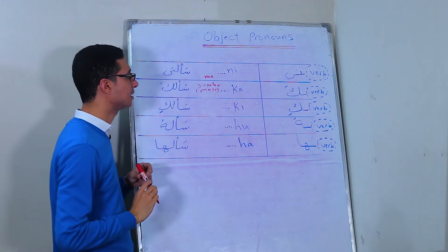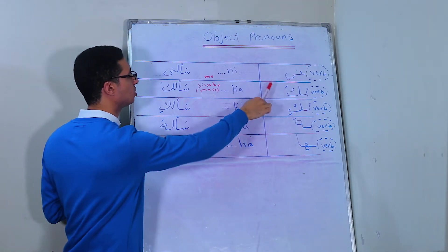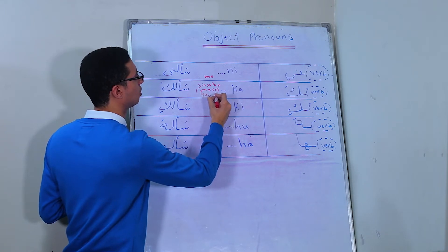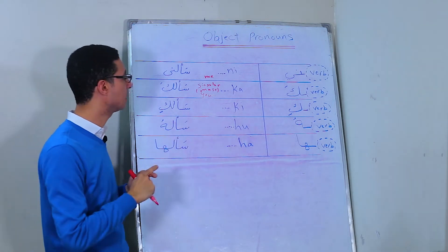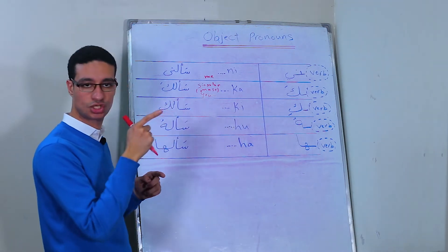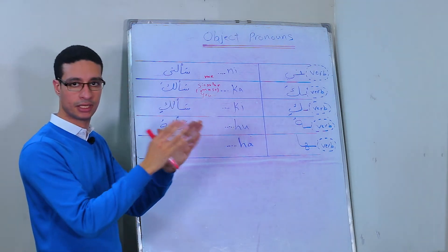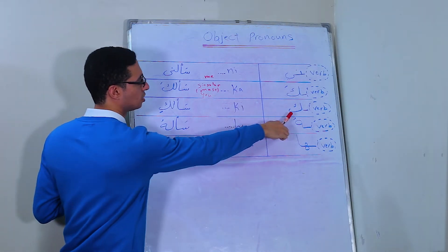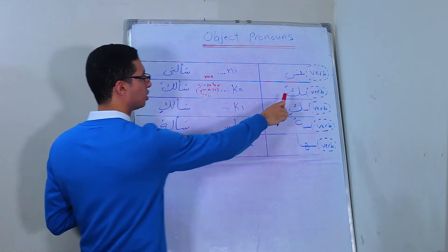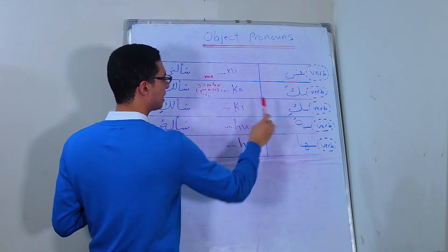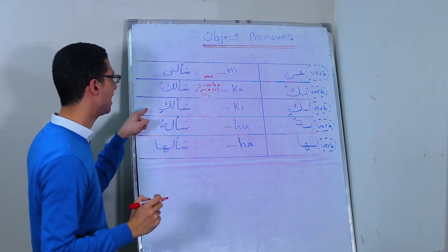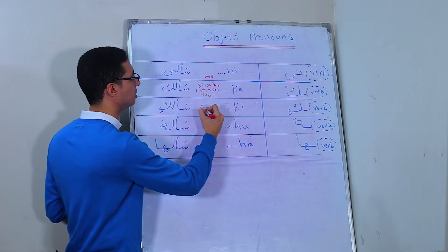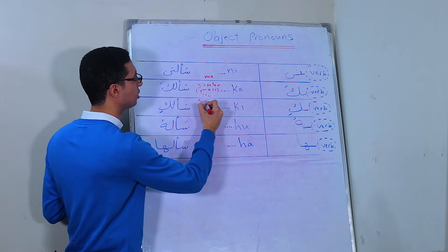The second one is كَ, which we use to say 'you,' but for the masculine if I'm talking about a guy. سألكَ, he asked you. But if you're talking to a girl, it will be كِ. It's written the same, but the short vowel here uses فتحة, but here it's كسرة. So سألكِ, he asked you. This is feminine and singular.